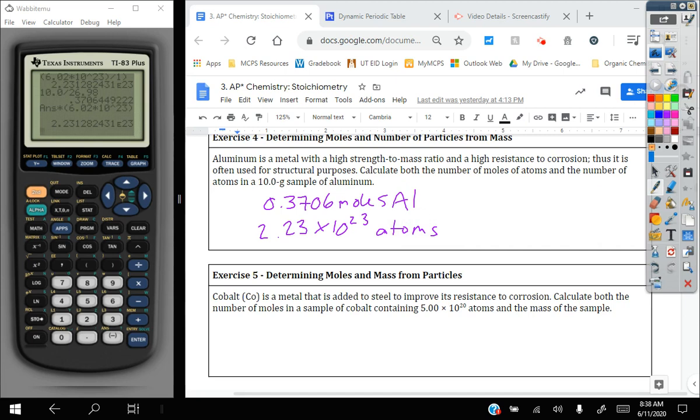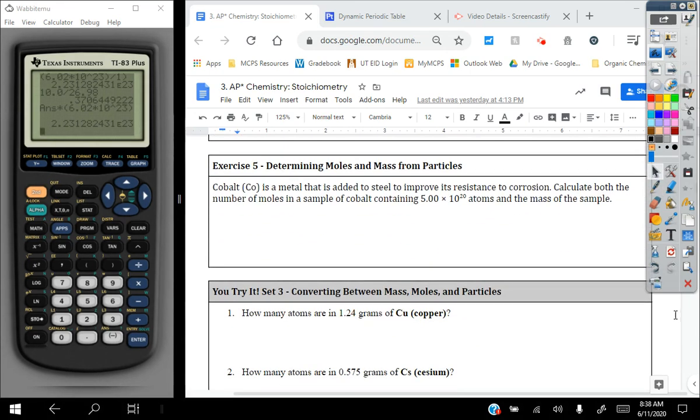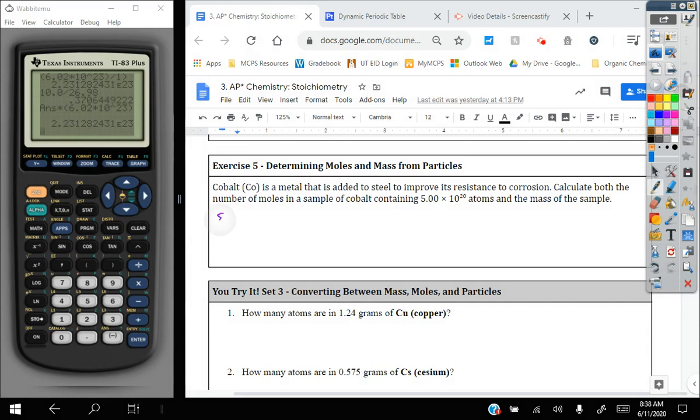I know this problem did ask for moles and for number of atoms. So you should report both of them if it asks for both of them. This next one, however, it does ask for moles and for mass. So we can do the same setup. 5.00 times 10 to the 20th atoms. Now, be careful with cobalt. Cobalt is capital C lowercase o, which is different from capital C capital O. Capital C capital O is carbon monoxide. And so your masses are going to be different at the end.